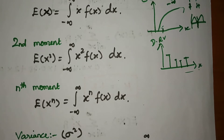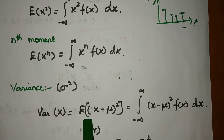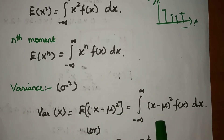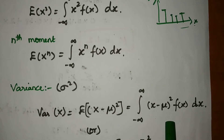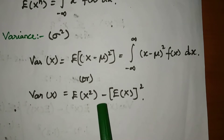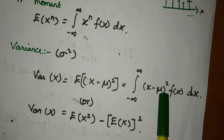Variance, denoted sigma squared. Variance of x is equal to E[(x minus mu)²]. That is the same formula as for discrete random variables — for discrete we use summation, and when we integrate as a continuous random variable we use integration. The difference is summation versus integration. So variance equals the integral from minus infinity to plus infinity of (x minus mu)² times f(x) dx. We will mostly use the formula E[x²] minus (E[x])².